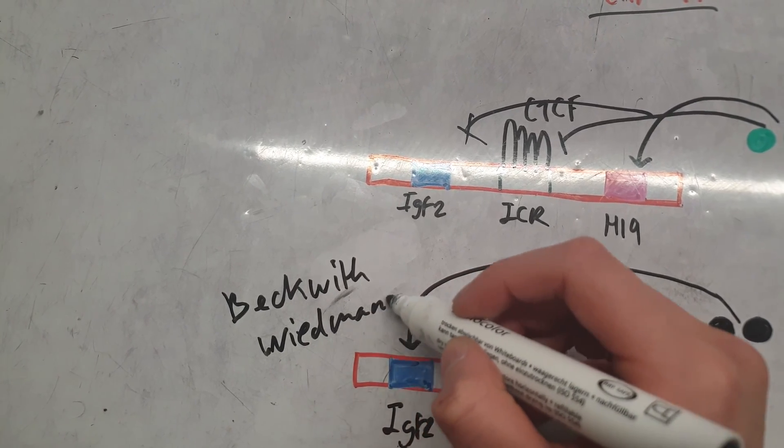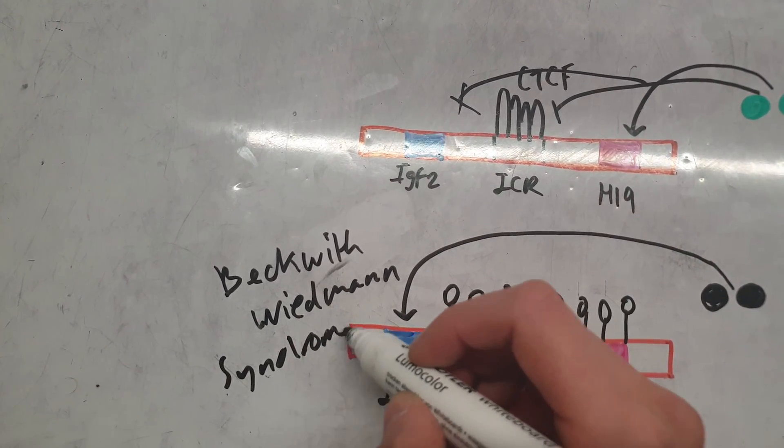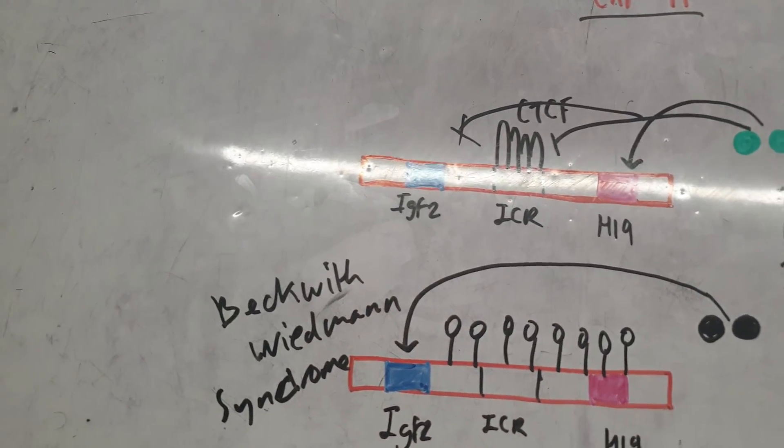Beckwith-Wiedemann syndrome is basically an overgrowth syndrome.